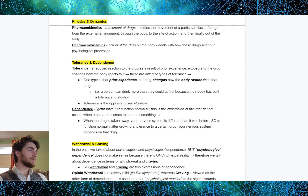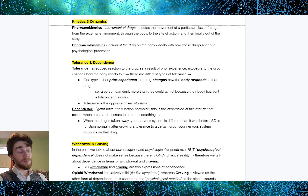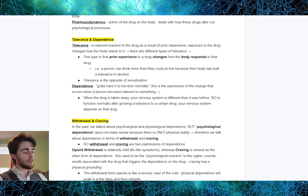Talking about tolerance and dependence. Tolerance is a reduced reaction to a drug as a result of prior experience. Exposure to the drug changes how the body reacts to it. For example, a person can drink more than they could at first because their body has built up a tolerance to alcohol. Tolerance is basically getting used to something, and it is the opposite of sensitization. When it comes to dependence, the idea is that we have to have it to function normally. Dependence is the expression of the change that occurs when a person becomes tolerant to something.